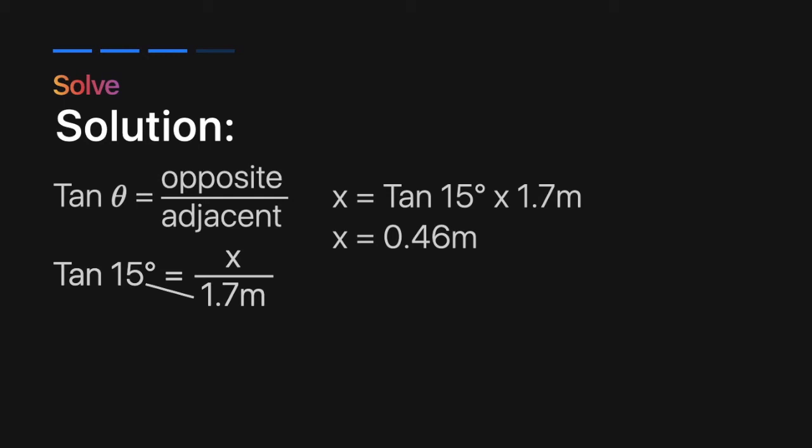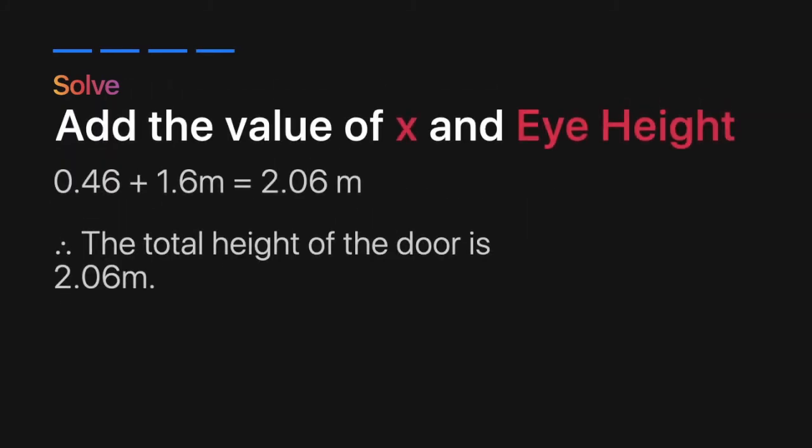Cross multiply and you'll get x equals tangent 15 degrees times 1.7 meters which is equivalent to x equals 0.46 meters. Now, add the computed value of x and the eye height. It is 0.46 plus 1.6 meters and that is equal to 2.06 meters. Therefore, the total height of the door is equivalent to 2.06 meters.